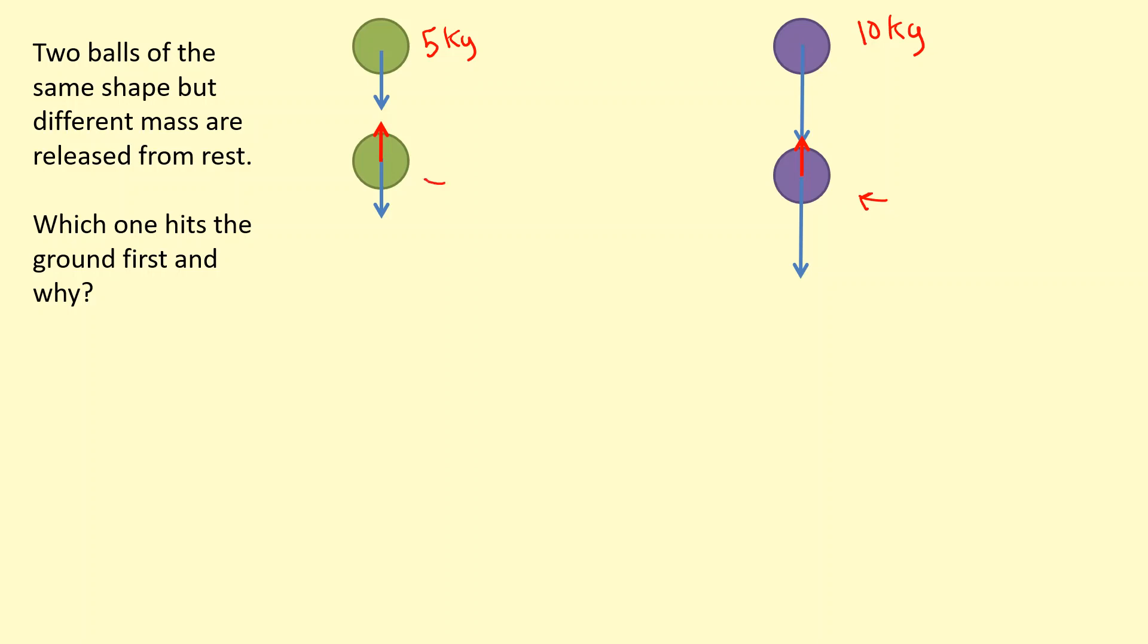While this one, the resultant force on it is not as large at the moment, so its acceleration is still going to accelerate down, but not as much. Eventually, the green one is going to reach a terminal velocity first because now the weight and the air resistance are balanced.